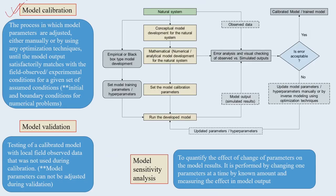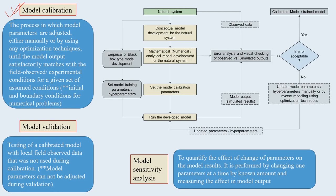Model calibration is one of the most important parts of a modeling exercise. If our calibration is not correct, then the modeling exercise will be totally unsuccessful. In calibration, we basically try to adjust various parameters manually or by using any kind of optimization technique, until the model output becomes satisfactory and matches with field observed or experimental conditions.